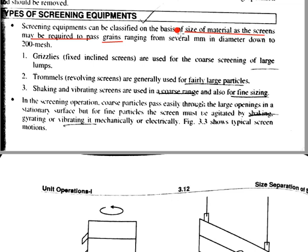There are three main types: first, grizzlies; second, trommels; and third, shaking and vibrating screens. Grizzlies and trommels are fixed inclined screens — they are one type of fixed screen placed at an inclined angle — and they are used for coarse screening of large lumps.